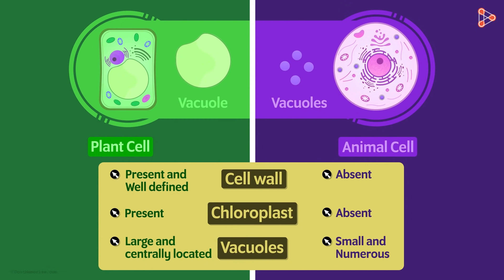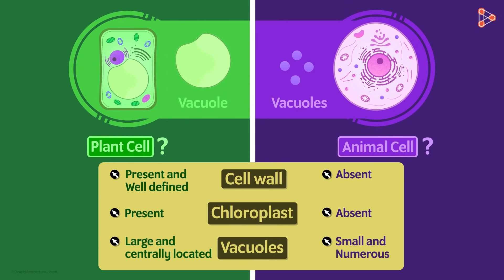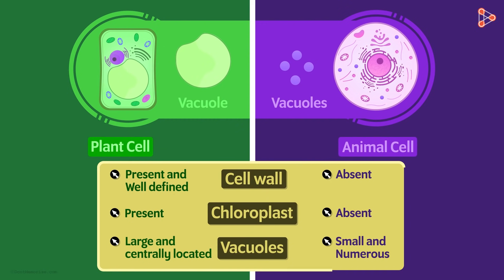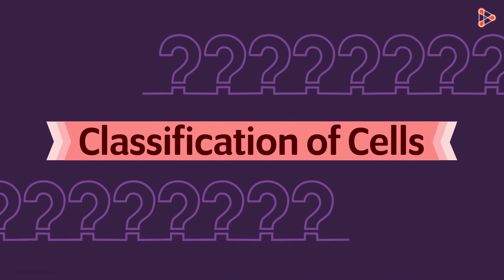Apart from these, there are several other differences between the two cells, but we will have a look at them in higher grades. For now, is the classification of cells done only on these bases? Are there only two types of cells — plant cells and animal cells? Think for a moment. The answer is a definite no. This was just the difference between plant and animal cells; this is not the way cells are classified.